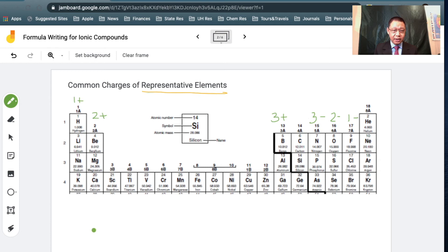So for example, if you have beryllium, beryllium is in group 2 right over here. It would typically have a two plus charge in order to achieve noble gas electron configuration.